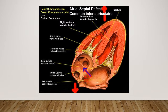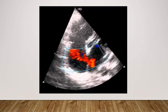Here's another illustration of a secundum ASD, which is highlighted here in the center. This would be a case where the right side is significantly larger. The diagram labels all the relevant structures, so feel free to pause and review them.